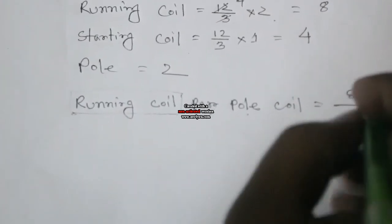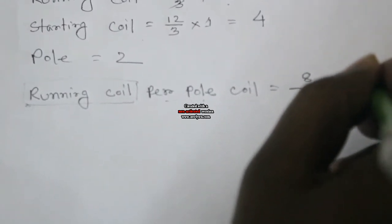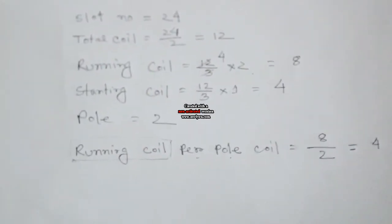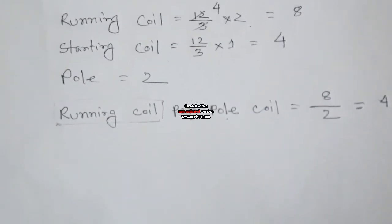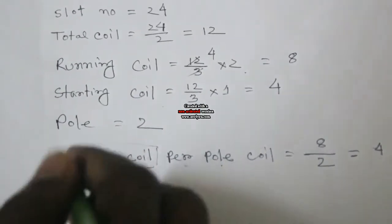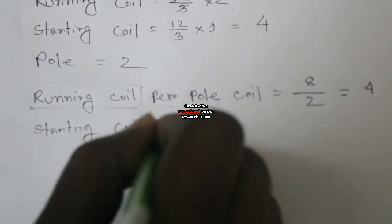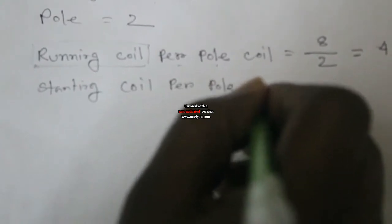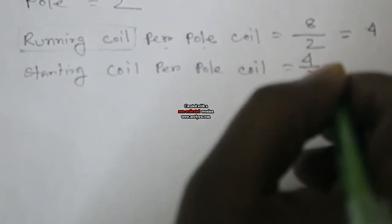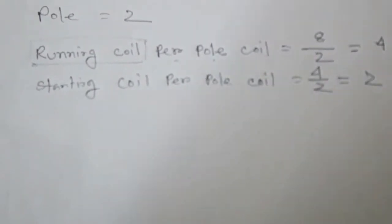This eight is divided by two, so here is four. That means four coils make one pole. Total four divided by two equals two, meaning two coils make one pole for the starting coil.